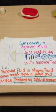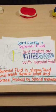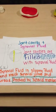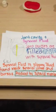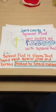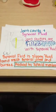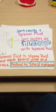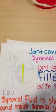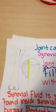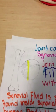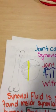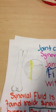A joint cavity is a cavity filled with synovial fluid. Synovial fluid is a slippery fluid found inside synovial joints and bursae, produced by the synovial membrane. A periosteum is a thick double-layered connective tissue sheath covering the entire surface of a bone except the articular surface, which is covered with cartilage.